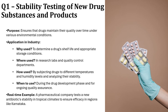Let's talk about one of the most crucial aspects of drug quality: stability testing. This falls under ICH Q1 Stability Testing Guidelines. Medicines need to remain effective and safe over time, no matter where they are stored or transported. This guideline ensures drugs can handle different environmental conditions like heat, humidity and light exposure. It is primarily applied in research labs and quality control departments, where scientists test how well a drug holds up under different conditions.